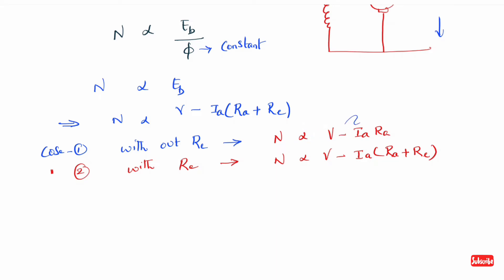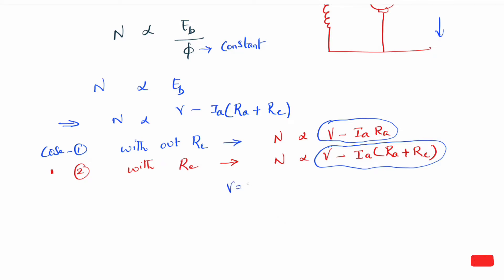In case 1 the subtracted value is smaller, and in case 2 with Re the subtracted value is larger. For example, simply take V = 100 volts, and Ia·Ra = 10. So in case 1: 100 minus 10 = 90, so speed is proportional to 90.